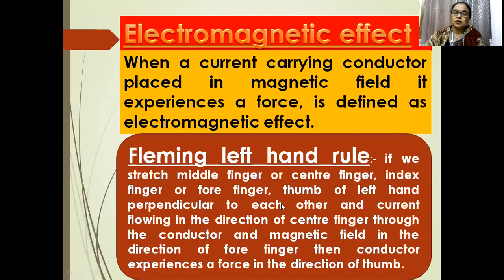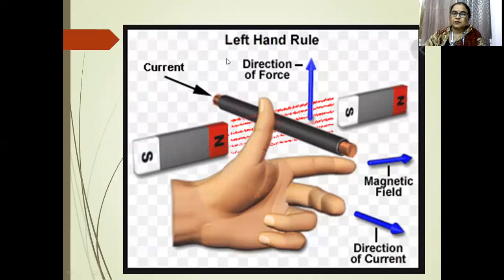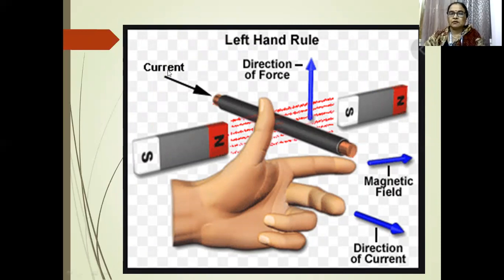Using Fleming's left-hand rule: from north to south, the armature coil is wrapped on a magnetic substance. With current flowing positive on one side and negative on the other, the force is experienced in the upward direction.